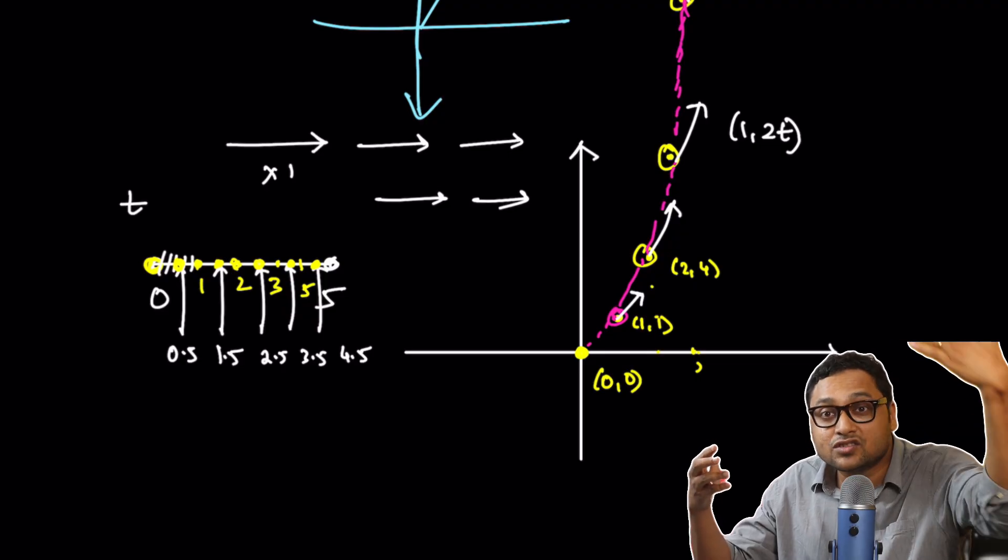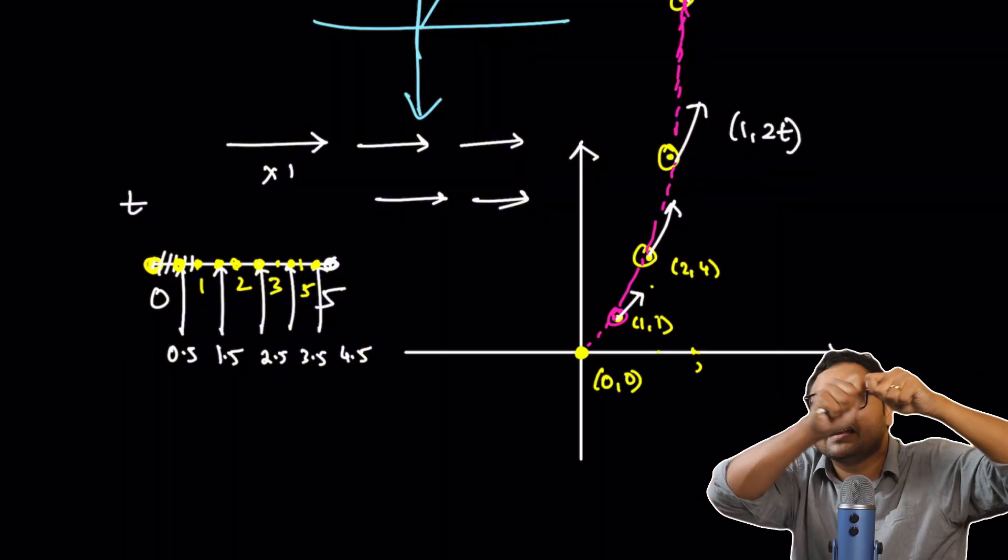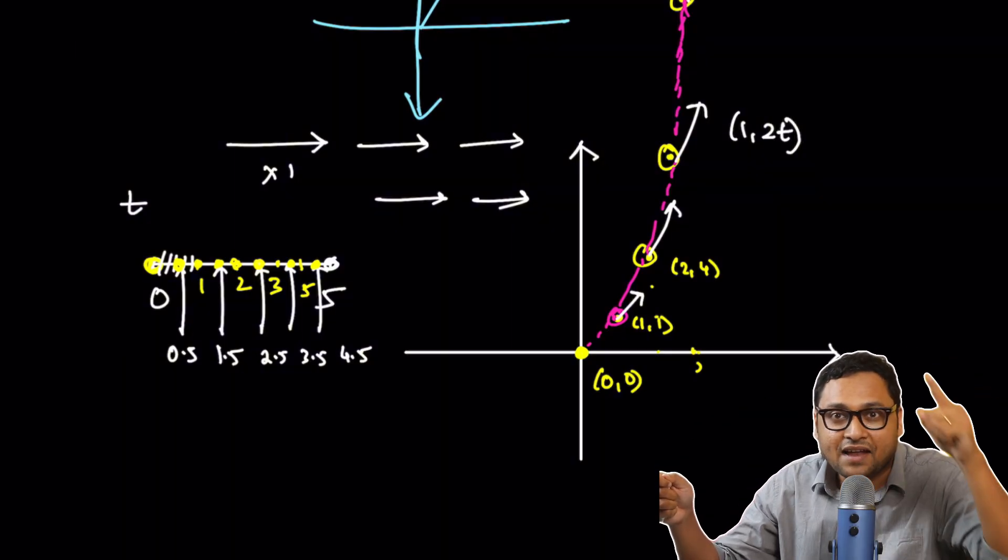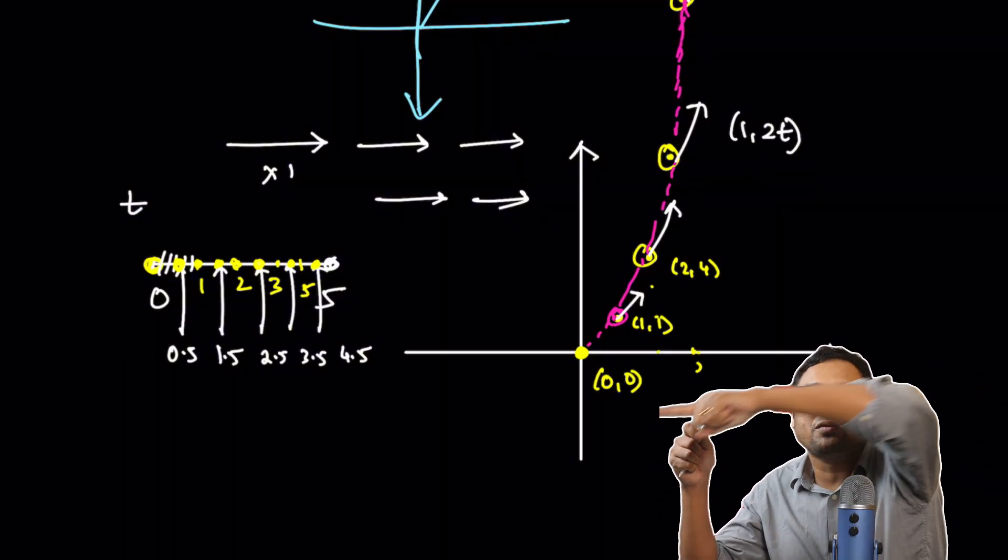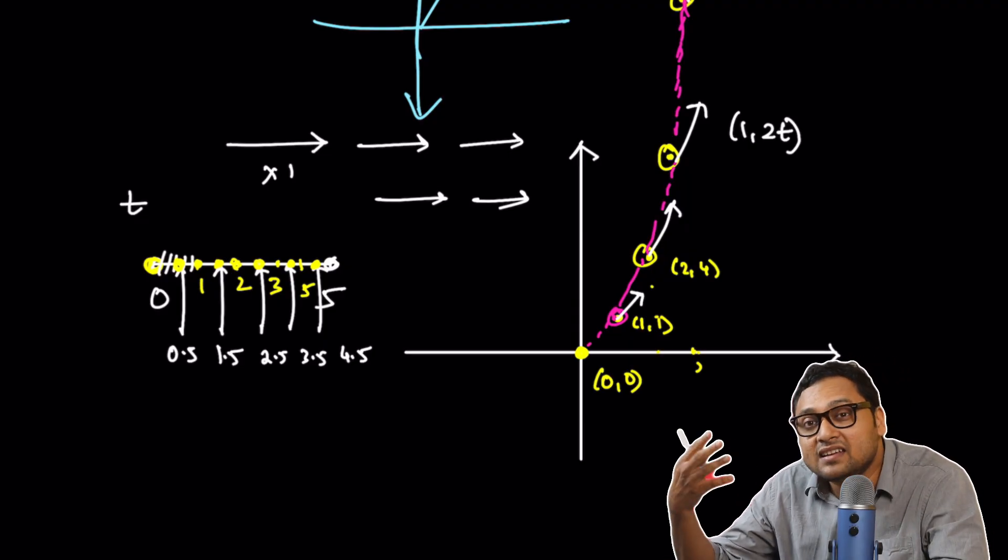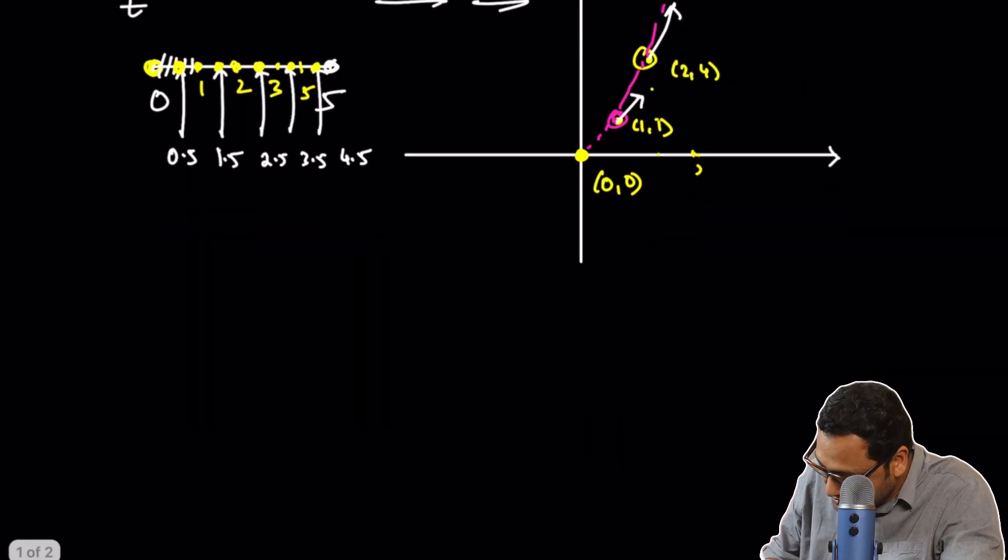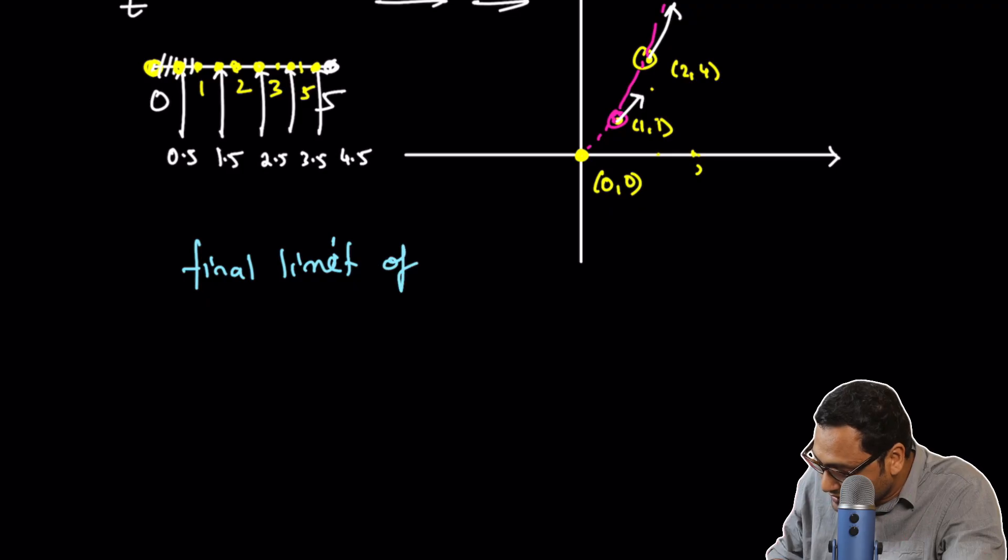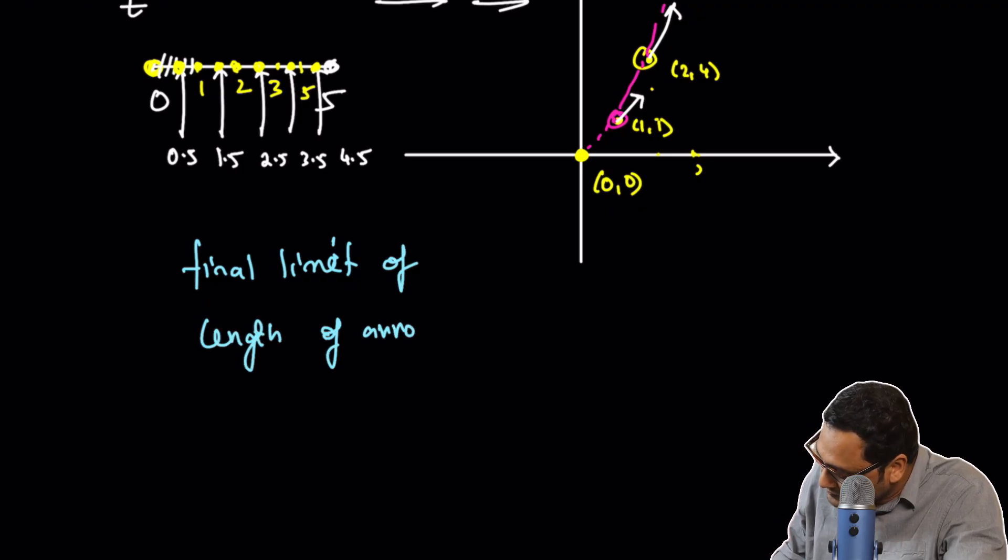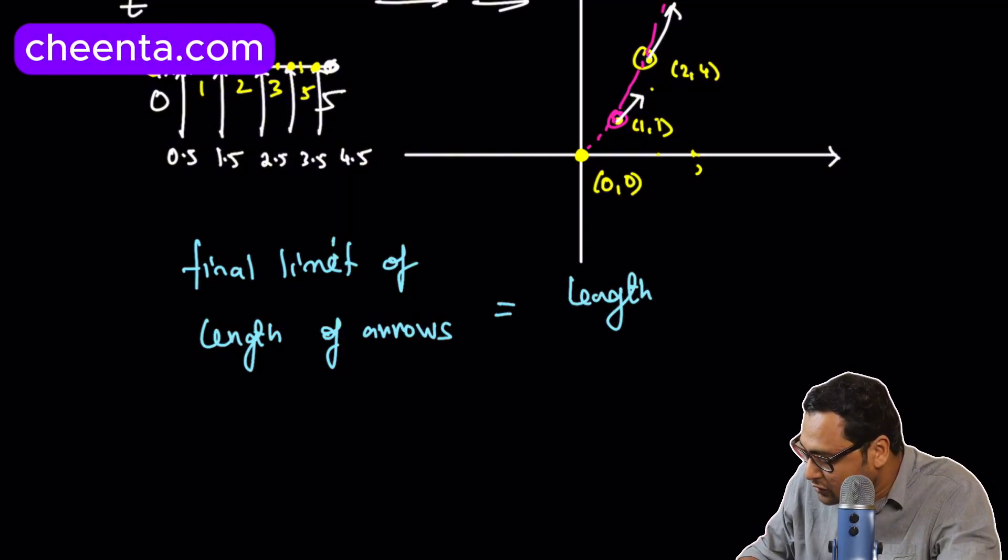For 100 arrows. And so on and so forth. I'll keep on increasing the number of arrows. And every time, I'll calculate the sum of the lengths. And finally, I'll take the limit of the sum of the lengths that I'm getting out at each step. This final limit is defined as the length of the curve.